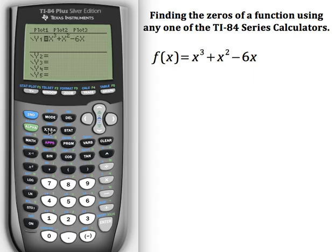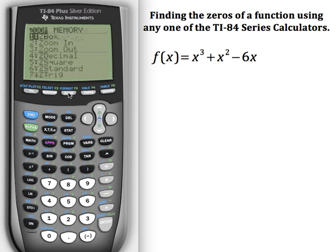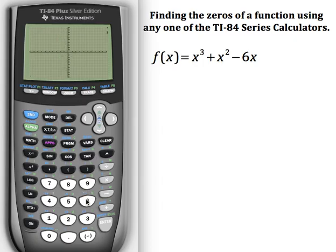Now my function is in, I can immediately hit the graph button. However, that may not put the graph exactly in the center or where I need it. So a lot of times to save a step, you can hit zoom, and then a menu comes up, in which case we want six because we want a zoom standard. Most of the time that's going to put the function exactly where we need it. And once you do that, it comes up.